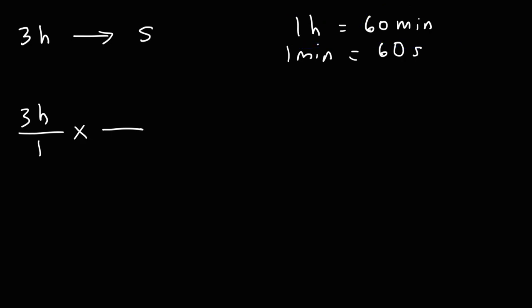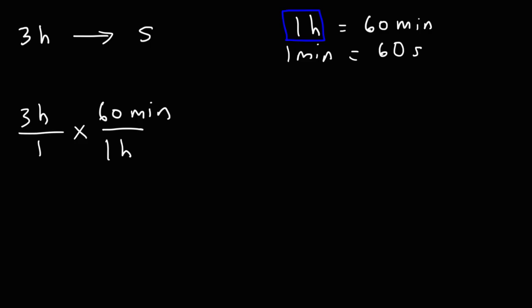We want the unit hours to cancel, so we're going to put that portion under the denominator. And then the second part will have the other side of the equation, that is the 60 minutes. You want to set it up in such a way that the unit hours cancel.